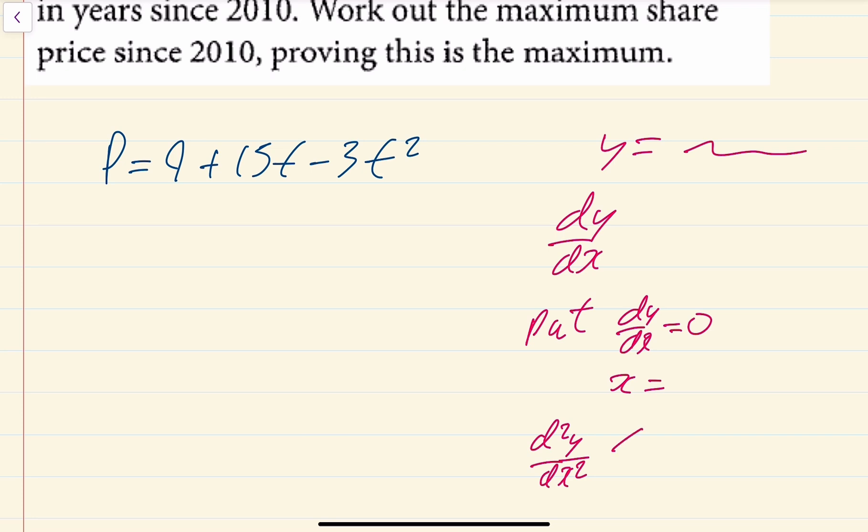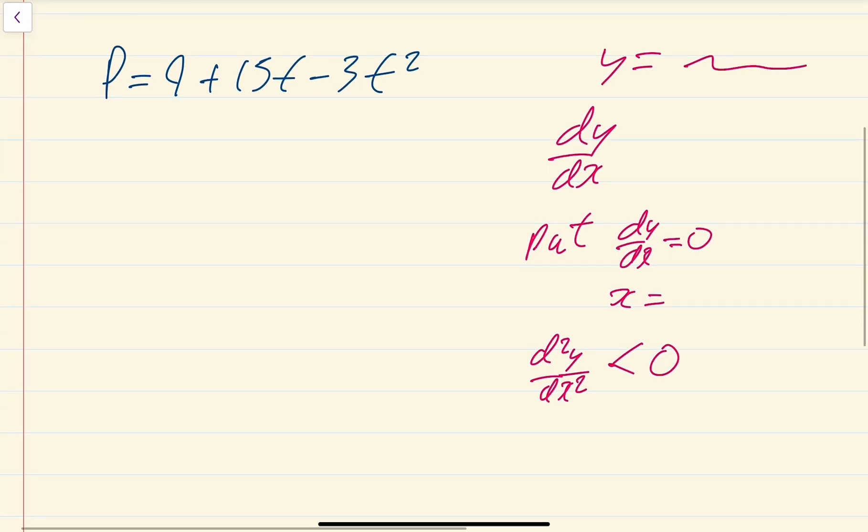For a maximum, d²y/dx² would be equal to zero, and then you would substitute your x value back into y to find the corresponding maximum value. That's what we want to do here - same idea but it's P in terms of t. The first thing we need to do is find dp/dt.